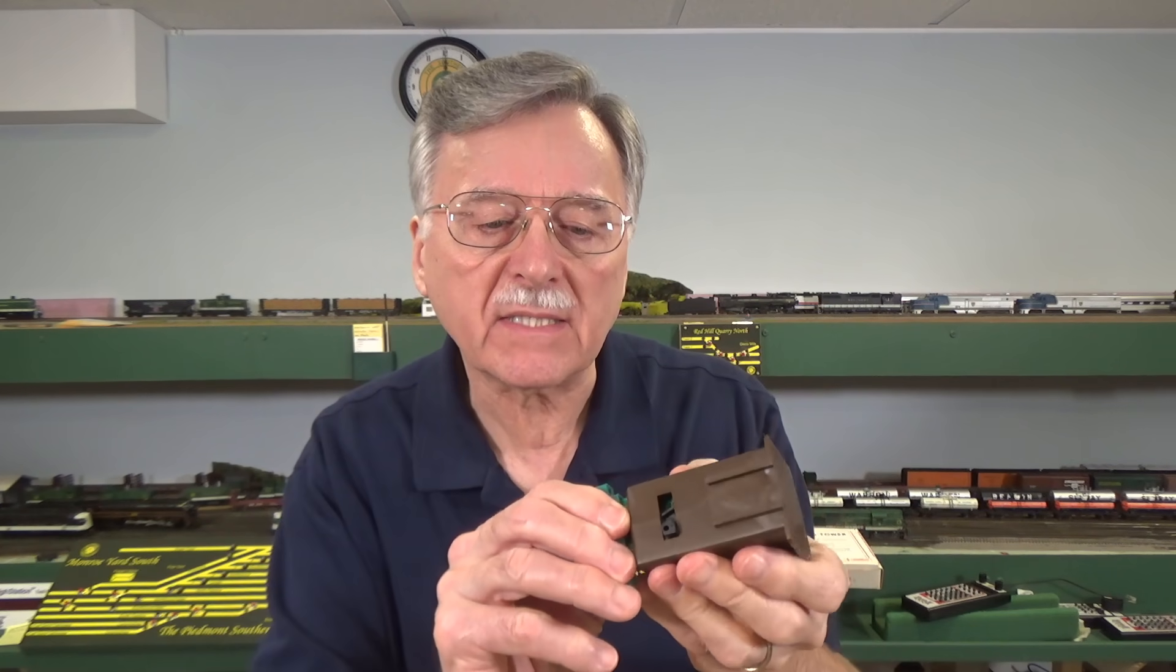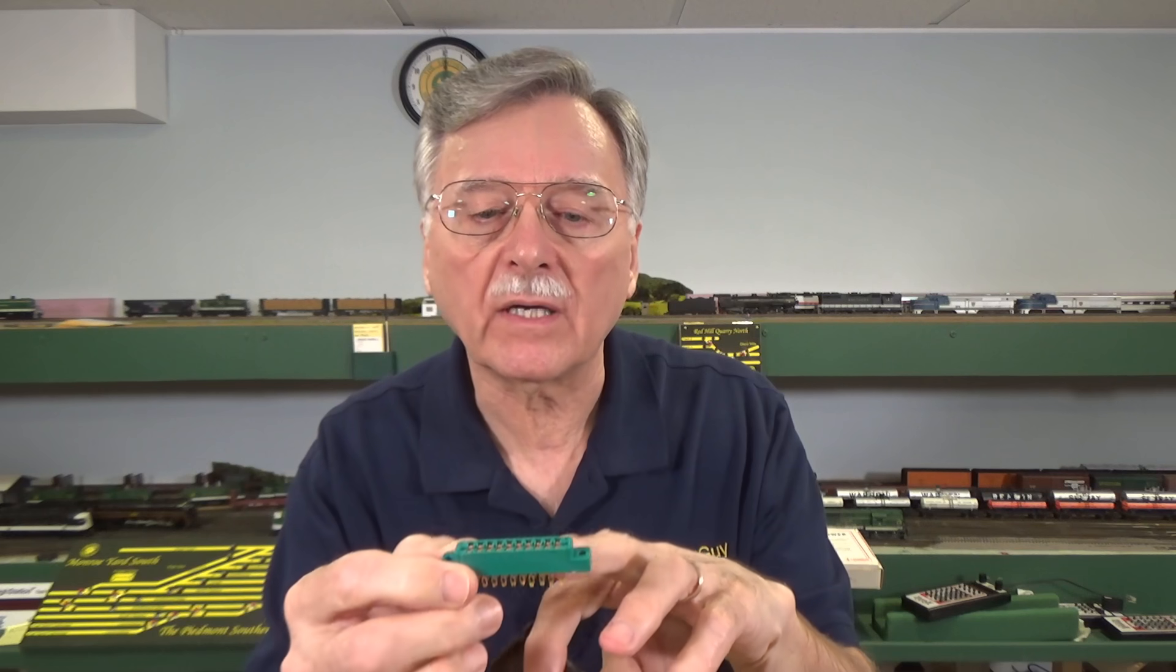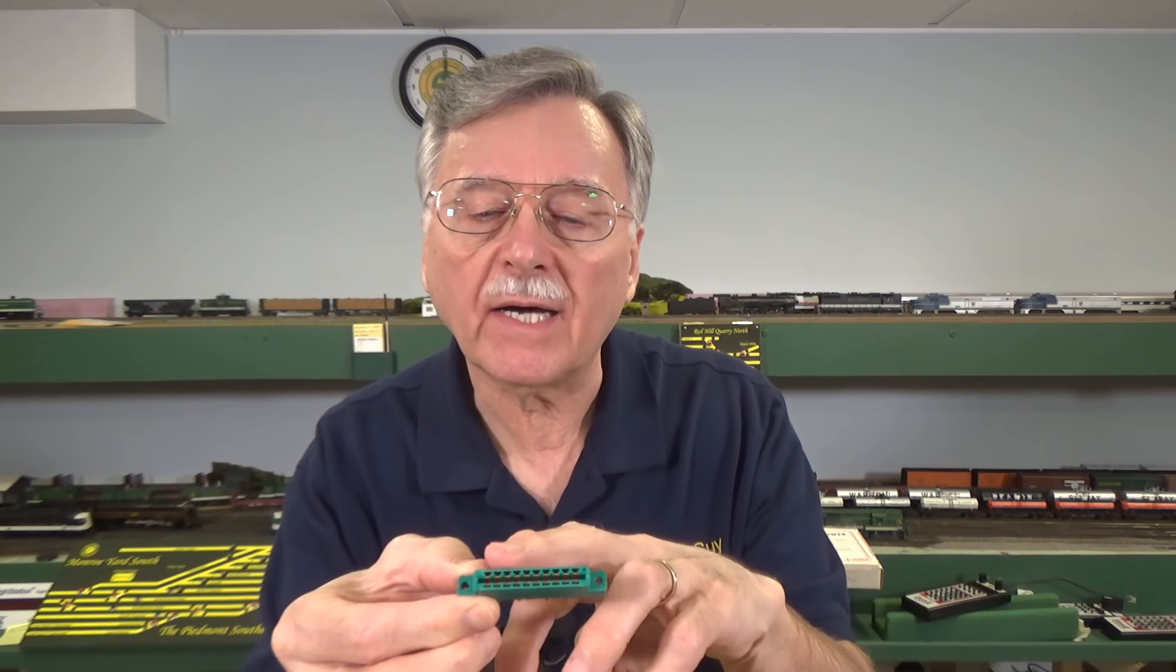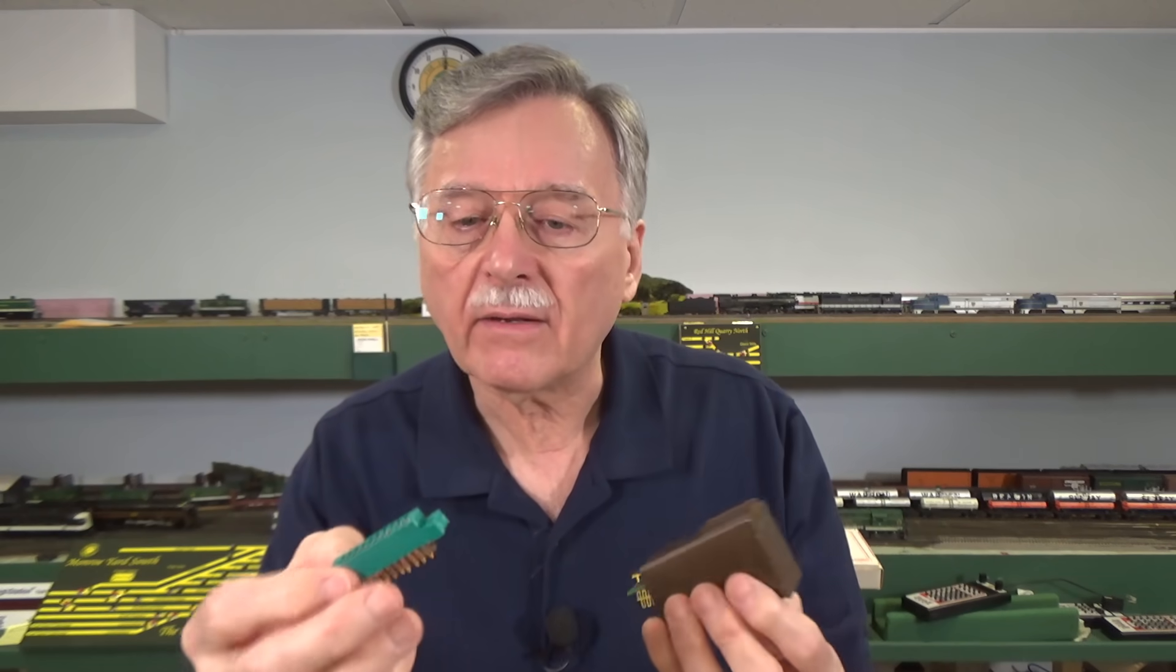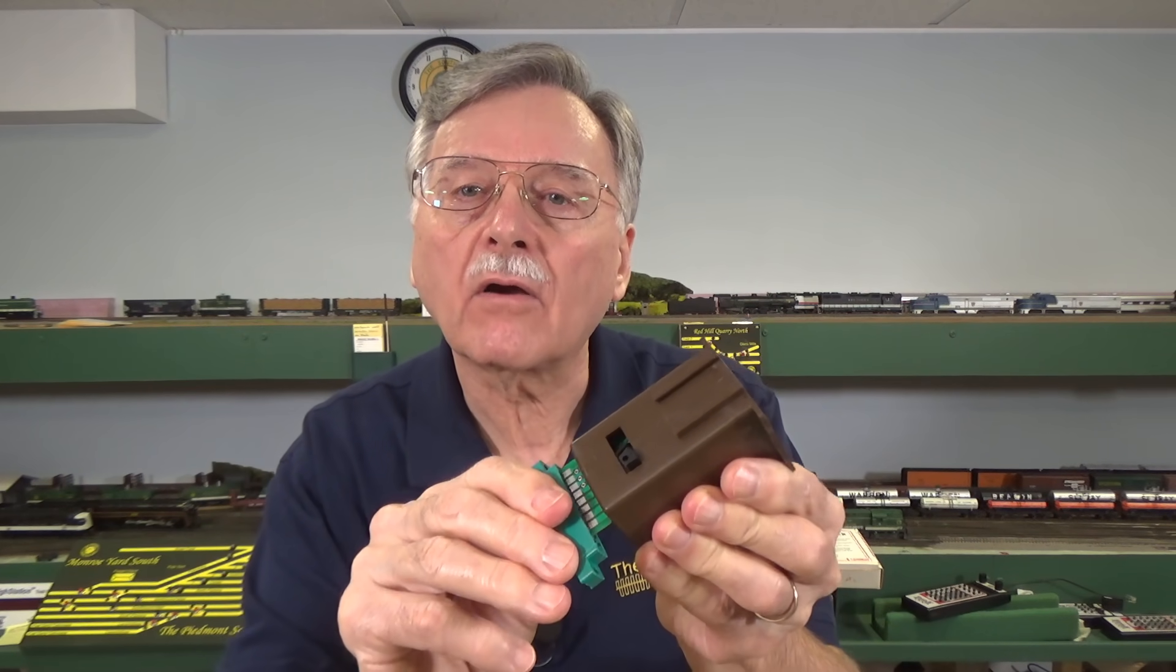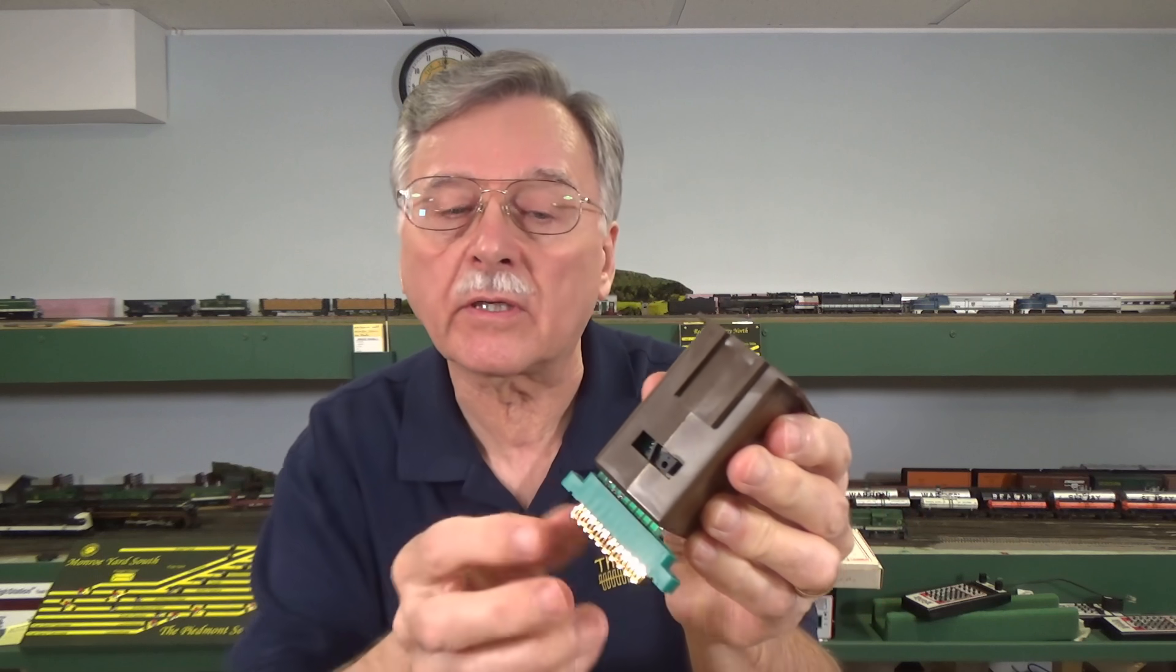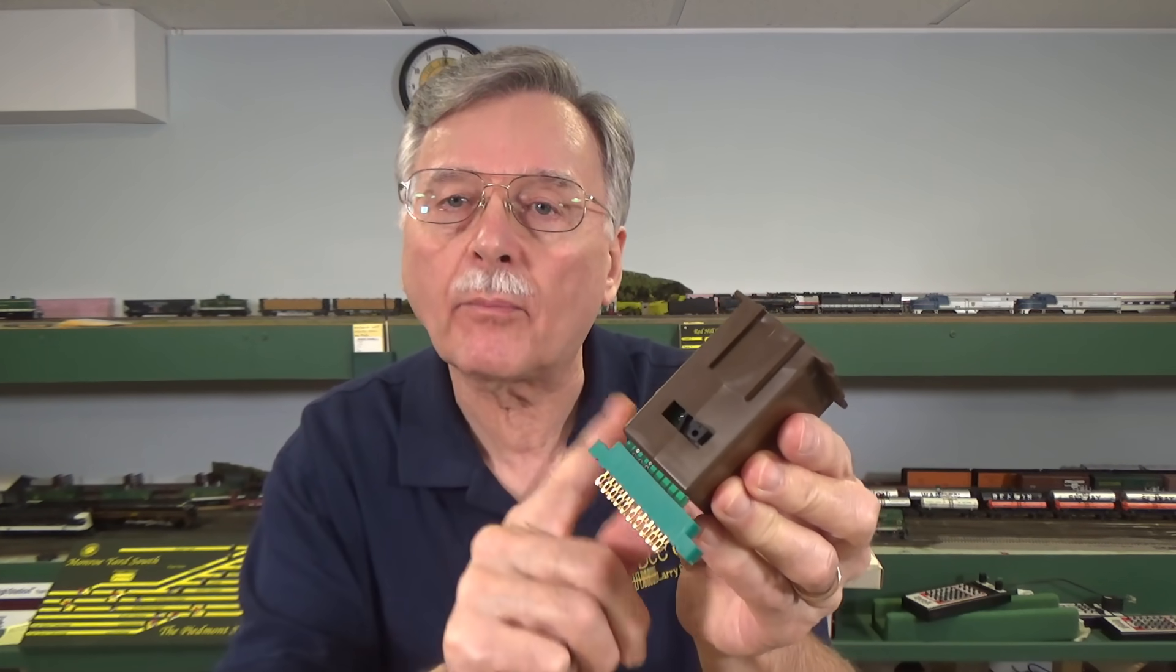One of them are these card edge connectors. They're just a green plastic device here with a series of contacts inside and some solder points on the outside. You can solder your wires to these and then just plug it in to the circuit board itself. That makes it so easy. If you ever need to swap one of these out, you can just disconnect it and you're done.